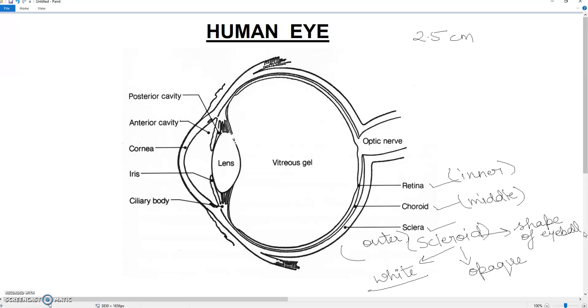Second, if we talk about the choroid layer, this is our pigmented middle layer. You can write pigmented layer. And it has many blood vessels. It will nourish the retina.